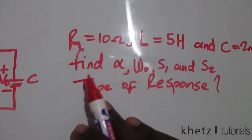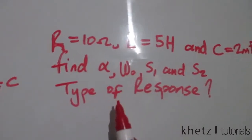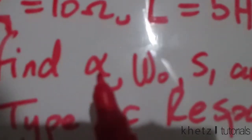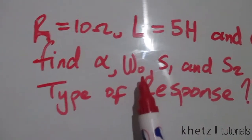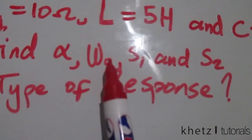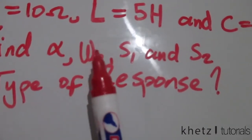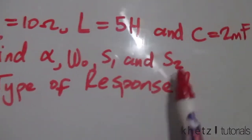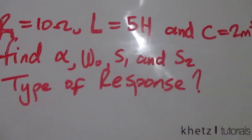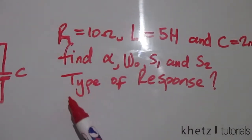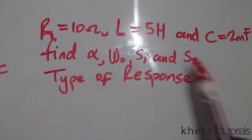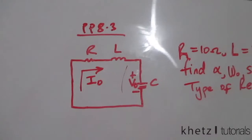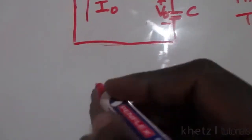You're asked to find alpha (the damping factor), omega_o (the resonant frequency or undamped natural frequency), s1 and s2 (the roots of the characteristic equation), and the type of response. Let's start.